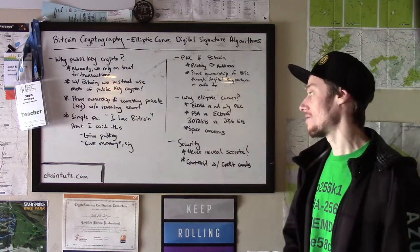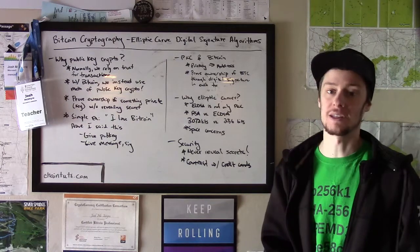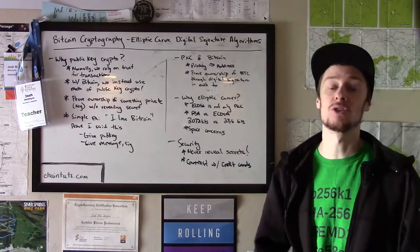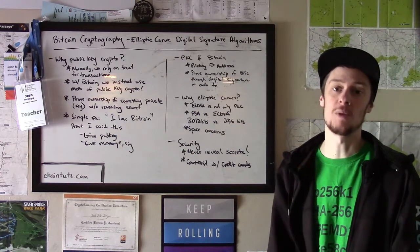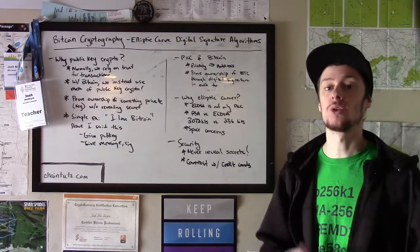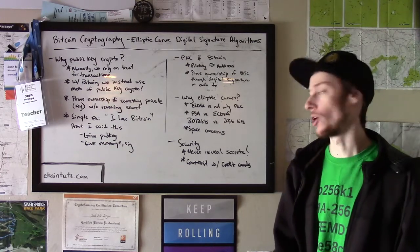So that provides a very clear advantage over other systems like RSA. Again, 3072 versus 256 might not seem like much, but when we're talking about thousands, hundreds of thousands, millions of transactions being added to the Bitcoin blockchain, that size difference really adds up. And so elliptic curves are really helpful in that regard.